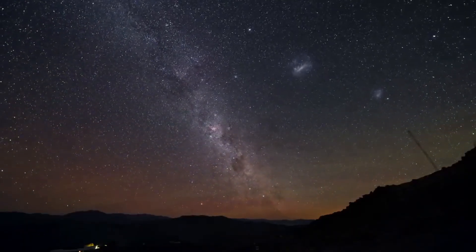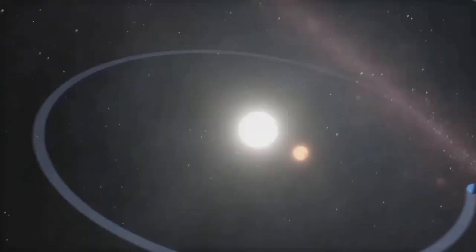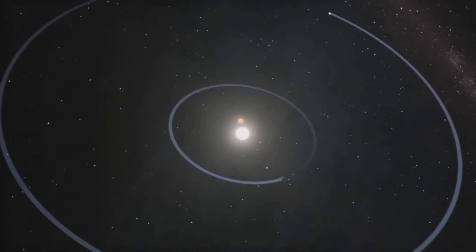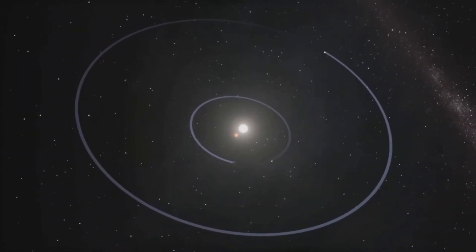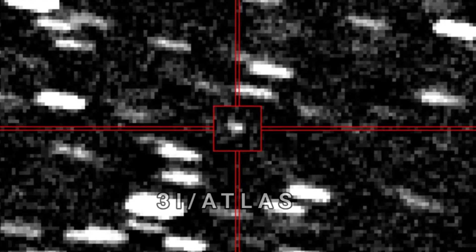Something extraordinary is happening above us. From the distant reaches of another star system, a cosmic traveler has entered our solar system. Meet 3i-Atlas, the third confirmed interstellar object in human history, now speeding through our celestial neighborhood.